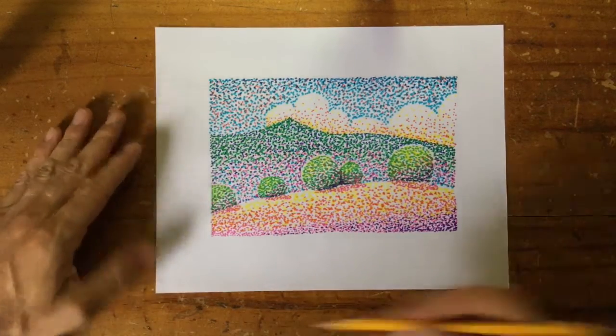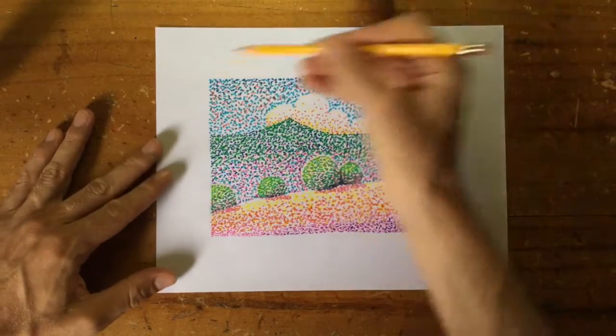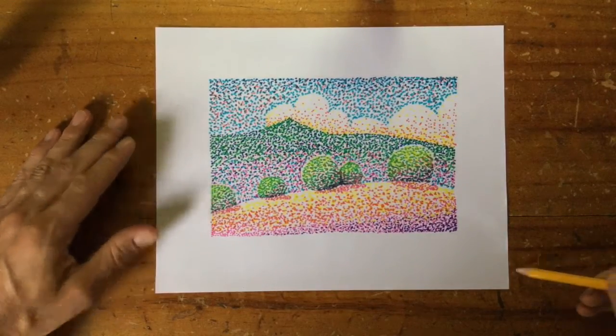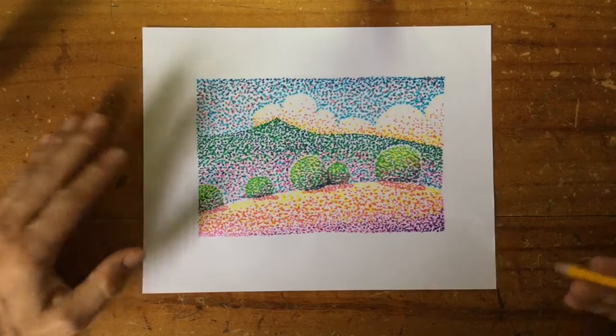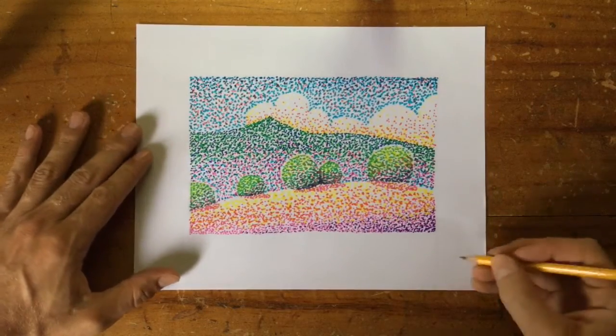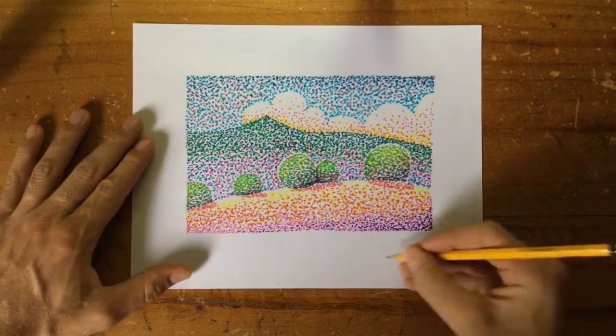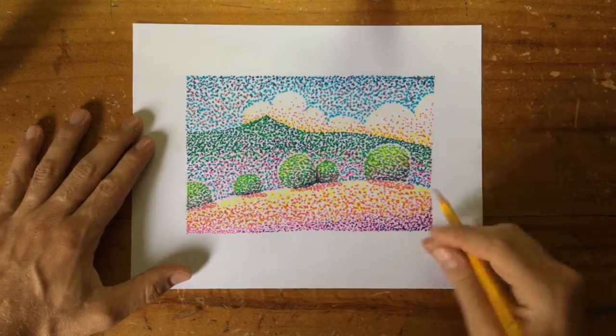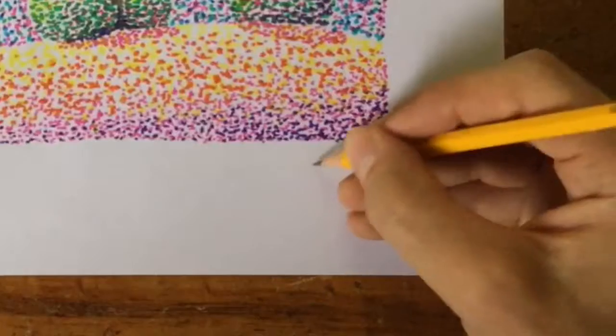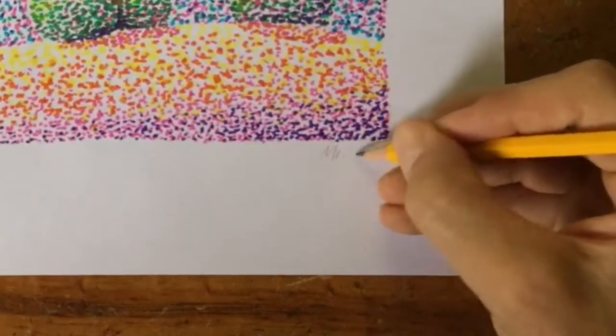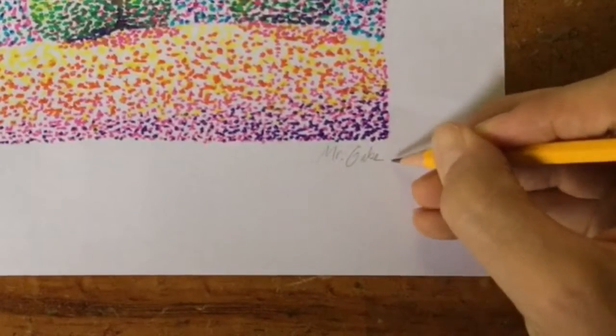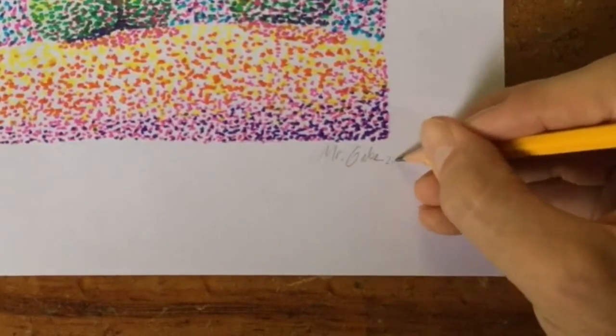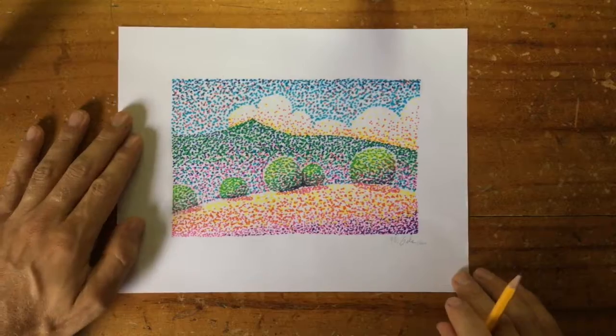One last thing for today. Since we've got this big wide frame on the page, and if you feel very proud of your work, it's always nice to add a signature. So I'm going to take my pencil and just in this bottom corner, I'm going to add my name and the date, or just the year usually. There we go.